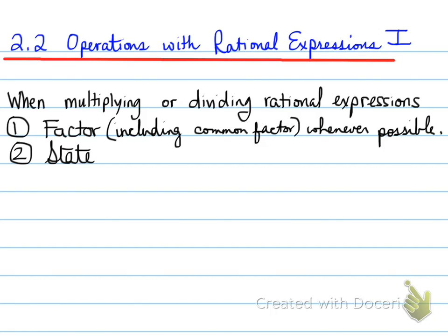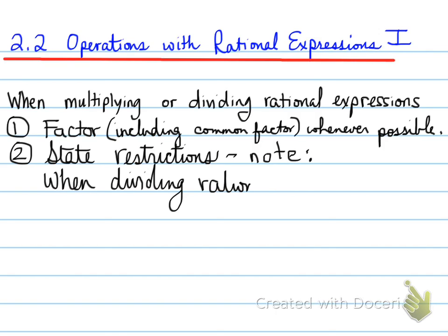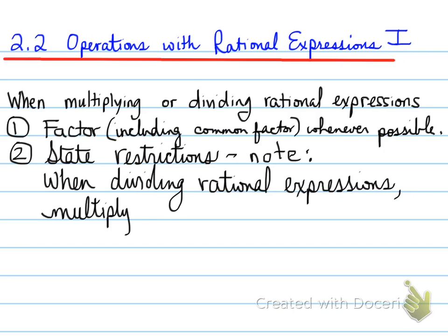Use those factors to state the restrictions. We state the restrictions whenever there's a denominator. Whenever the denominator is 0, it creates a restriction. A restriction is like a license to be able to cancel. When dividing rational expressions, you have to remember to multiply by the reciprocal.